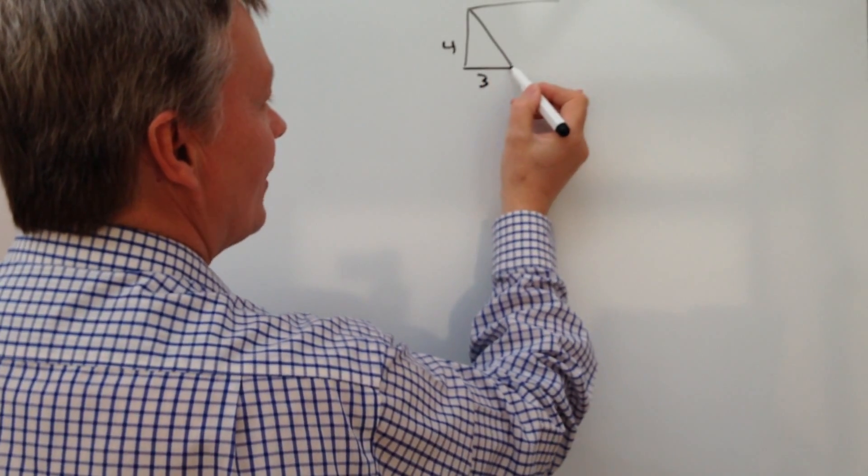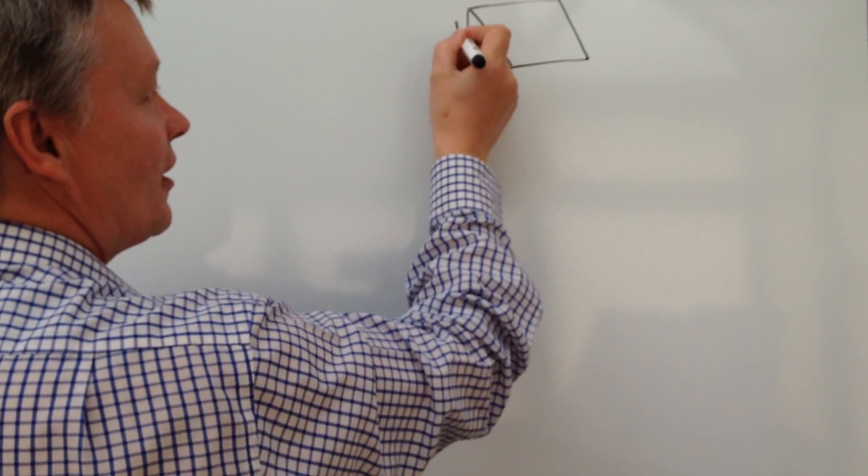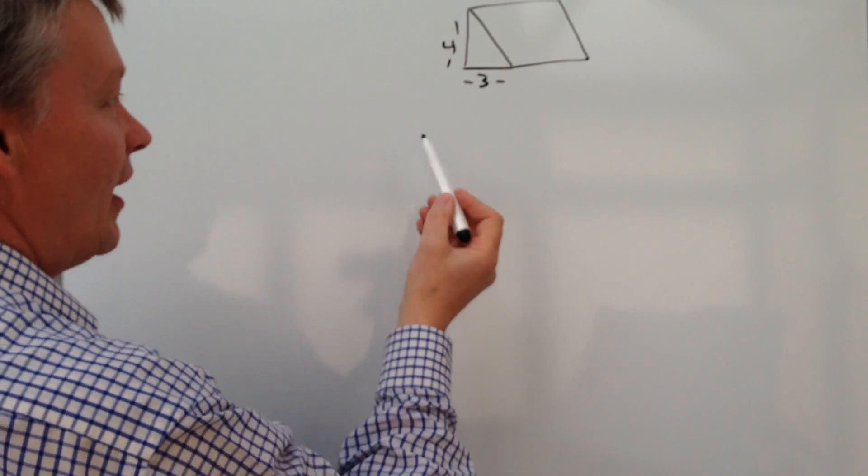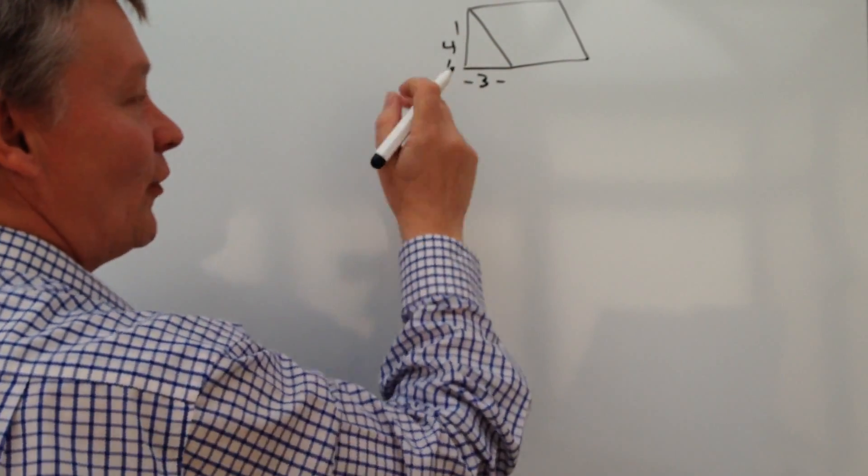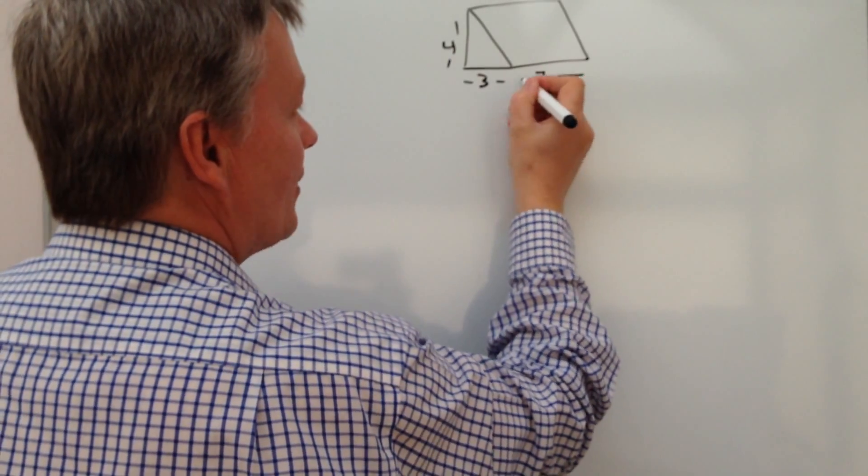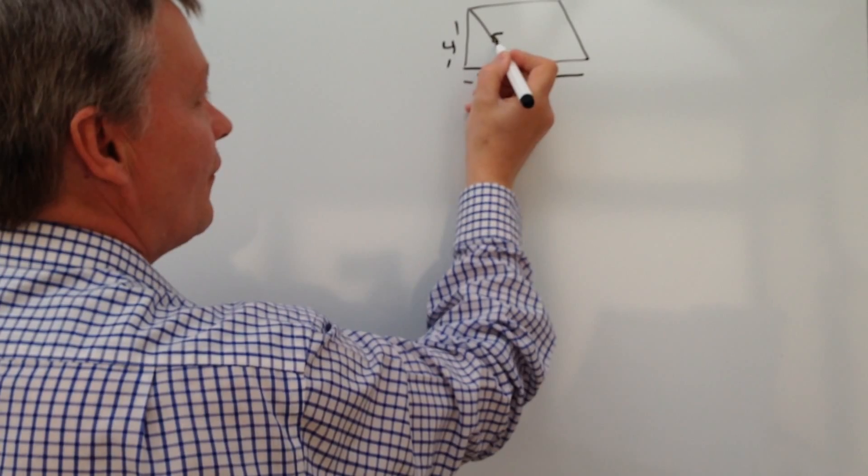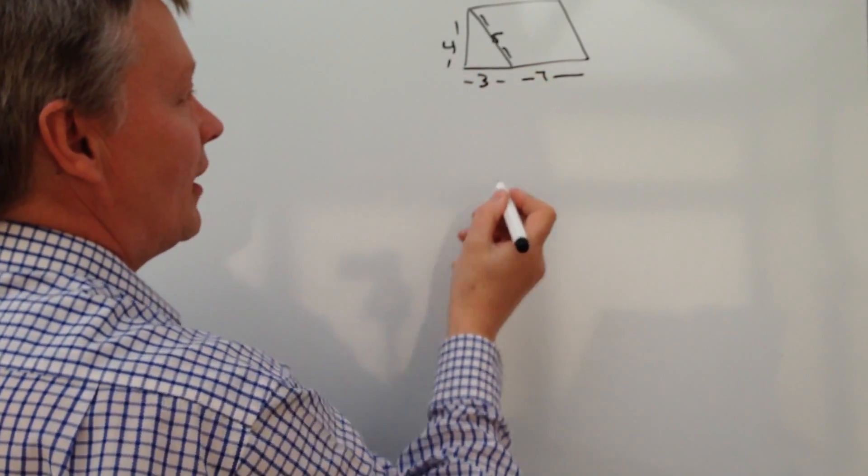On its side it looks something like that. And this particular dimension we've been given is three centimetres, four centimetres. The depth here is seven centimetres. And the hypotenuse here, which is this bit, is five centimetres.